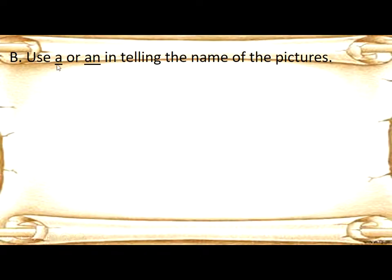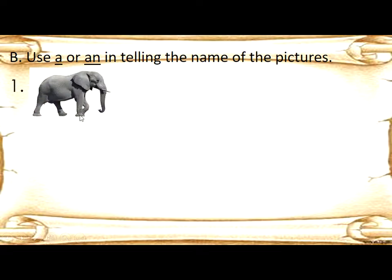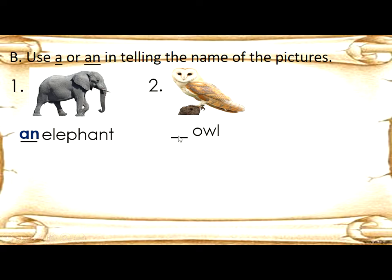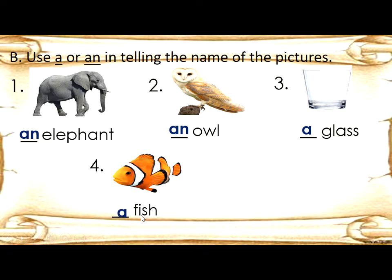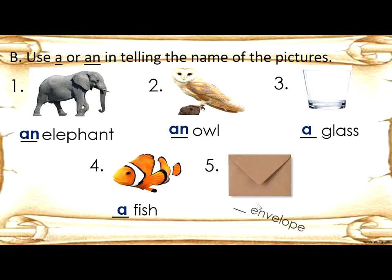Use A or AN in telling the name of the pictures. Number one: blank elephant — write AN elephant. Number two: blank owl — write AN owl. Number three: blank glass — write a glass. Number four: blank fish — write a fish. Number five: blank envelope — write an envelope.